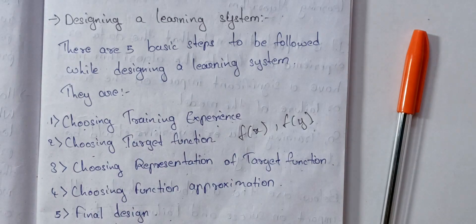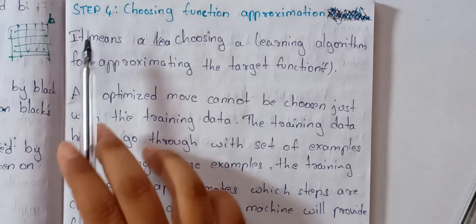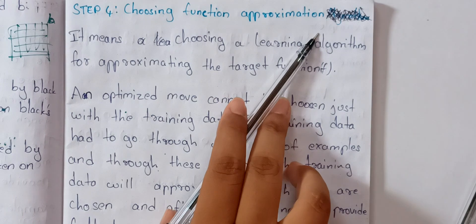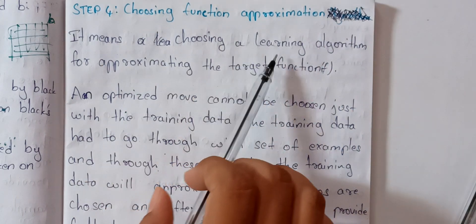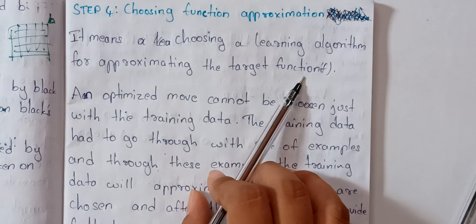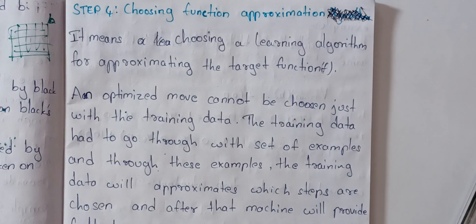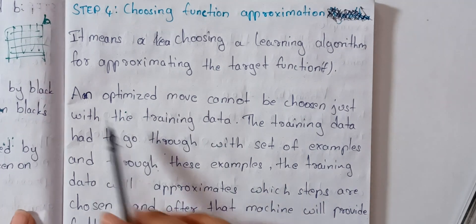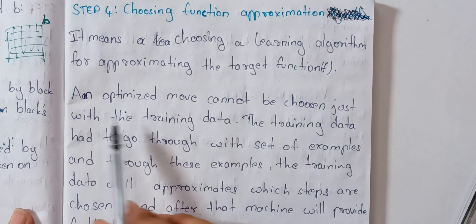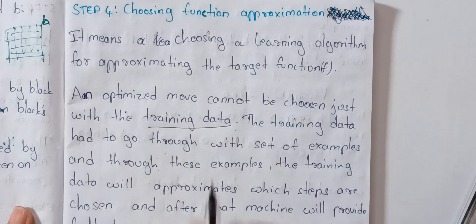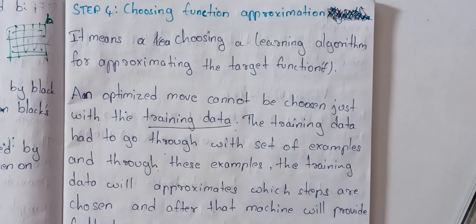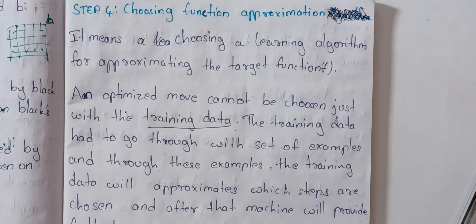Now, this is our main video topic: Step 4 — choosing function approximation. It means choosing a learning algorithm for approximating the target function. We will do it step by step. An optimized move cannot be chosen just with the training data, so we will aim for Step 1.